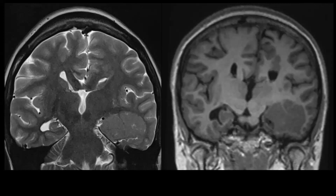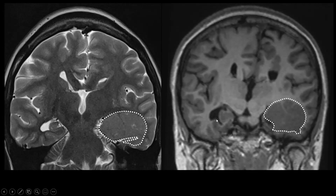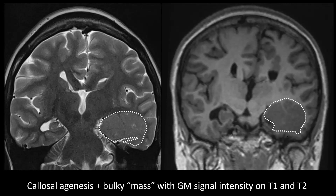Looking at this next case, we see the typical moose sign that we know from patients with complete callosal agenesis. So this is very likely a patient with callosal agenesis, and then we see a mass-like lesion in the left temporal lobe. We also have abnormalities that look like they have the same signal intensity as cerebral cortex — these look like gray matter heterotopias located above the left lateral ventricle.